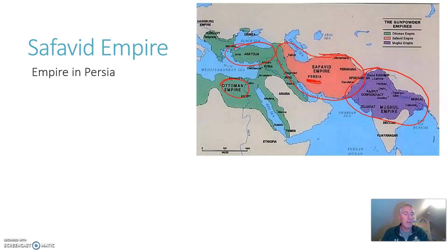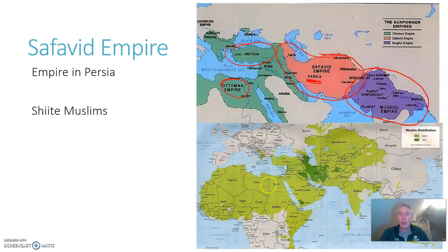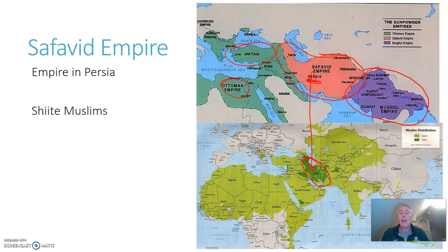A very important thing to remember about the Safavids is that they were Shiites — Muslims who believe that the leader of Islam should come from Muhammad's descendants. Looking at the map of Sunni and Shiite populations today, the light green are Sunnis, who make up the vast majority of the world's Muslim population. The dark green are countries with a Shiite majority. The only significant-sized country with a Shiite majority is Iran — which is pretty much where Persia was. The reason why Iran has a Shiite majority today is because of the Safavid Empire.